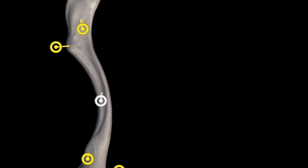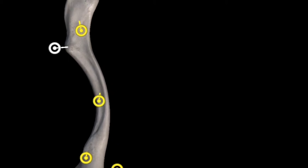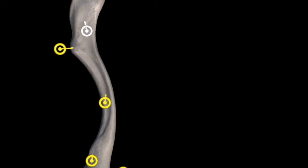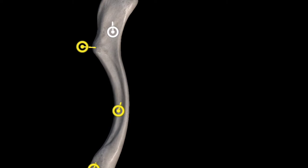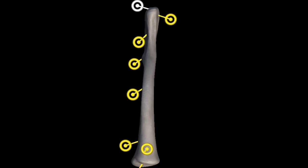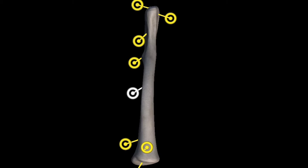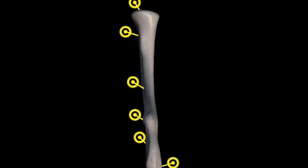Here is a tubercle known as the conoid tubercle, where the coracoclavicular ligament attaches. Here is a line known as the trapezoid line, where the trapezius muscle gets its insertion. Here is the acromial end. In the anterior view of the clavicle, here is the subclavian groove, the conoid tubercle, the trapezoid line, and the acromial end. On the posterior view, this is again the acromial end — the lateral side.